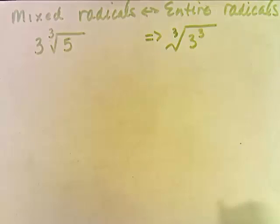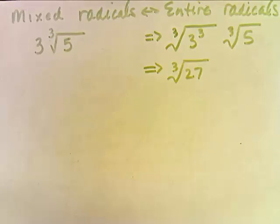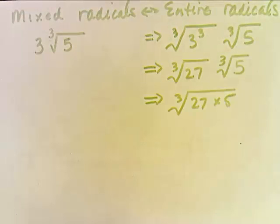3 is actually the cube root of 3 to the 3rd power, and the cube root of 5 is written as the cube root of 5. 3 cubed is 27 and we keep it under the cube root sign. We multiply it by the cube root of 5. Then we collect them both under the same cube root sign so we get the cube root of 27 times 5.